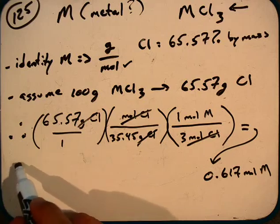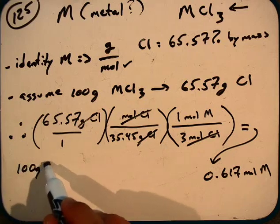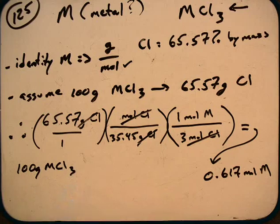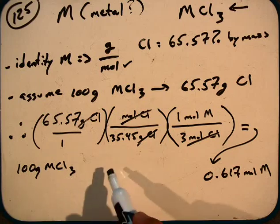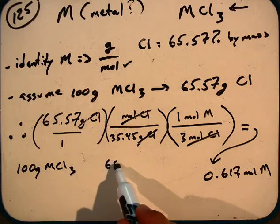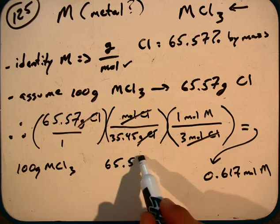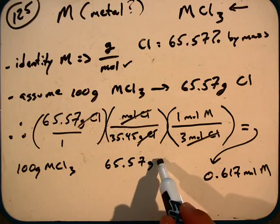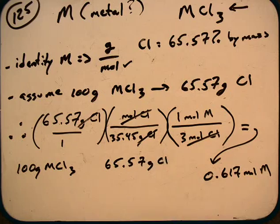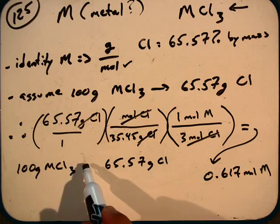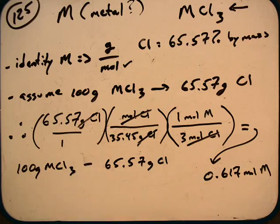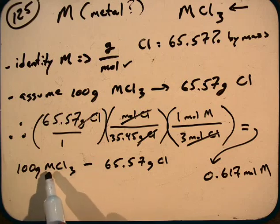Well, if we assumed in the beginning that there was 100 grams of MCl3, and with that assumption, that meant that we had 65.57 grams of Cl, if we subtract these, we have a mass deficiency. We have what's left over in this molecule. And so since this molecule is only made up of M and Cl3, we already know the mass contribution of Cl is 65.57 grams.